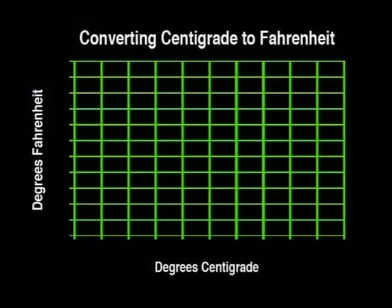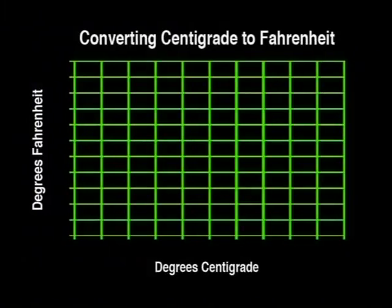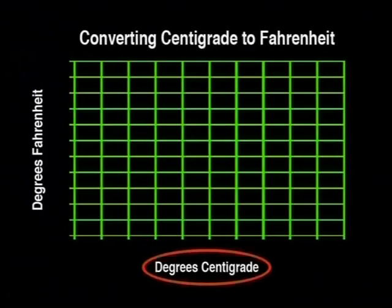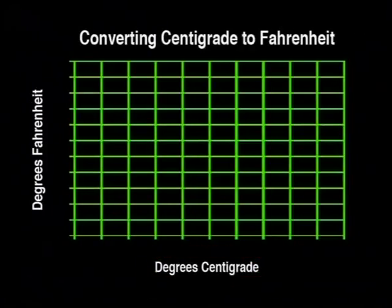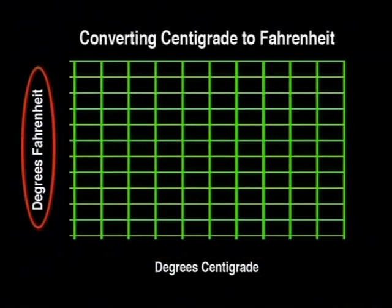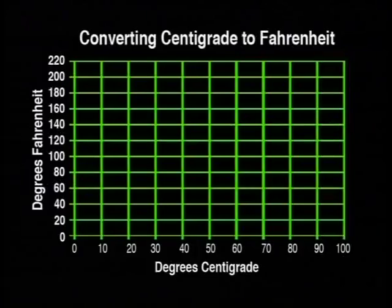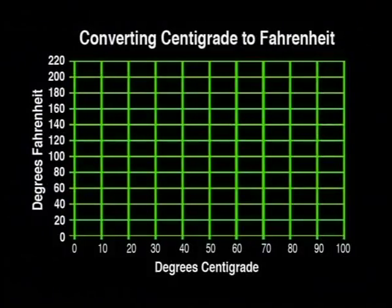Now we can use this graph to convert between temperatures given in centigrade or in Fahrenheit. We start with the axes, with a horizontal axis labeled degrees centigrade and the vertical axis labeled degrees Fahrenheit. Now we need to decide what scale to use on each axis. I suggest each block represents 10 degrees. We know that this will be a straight line graph because it converts one type of measurement to another, so we only need two points to plot the graph.